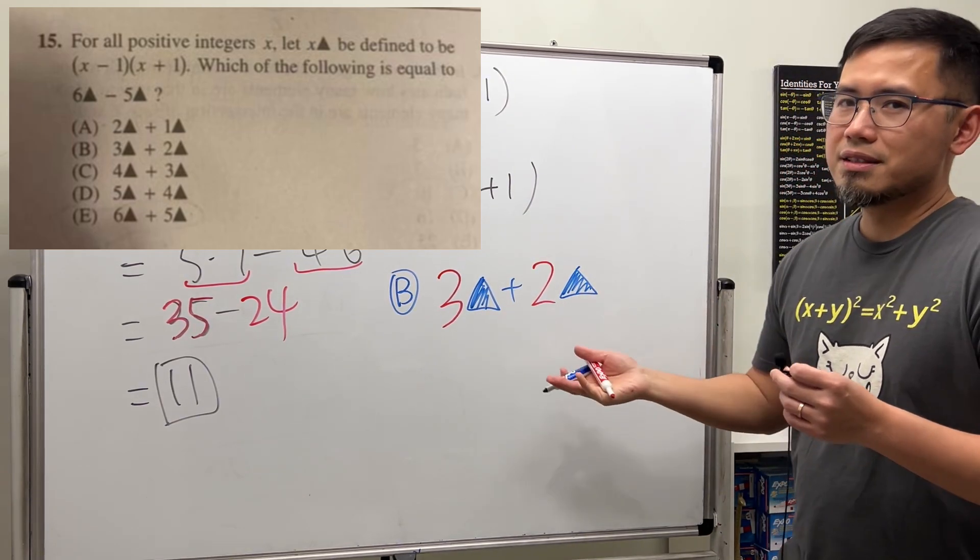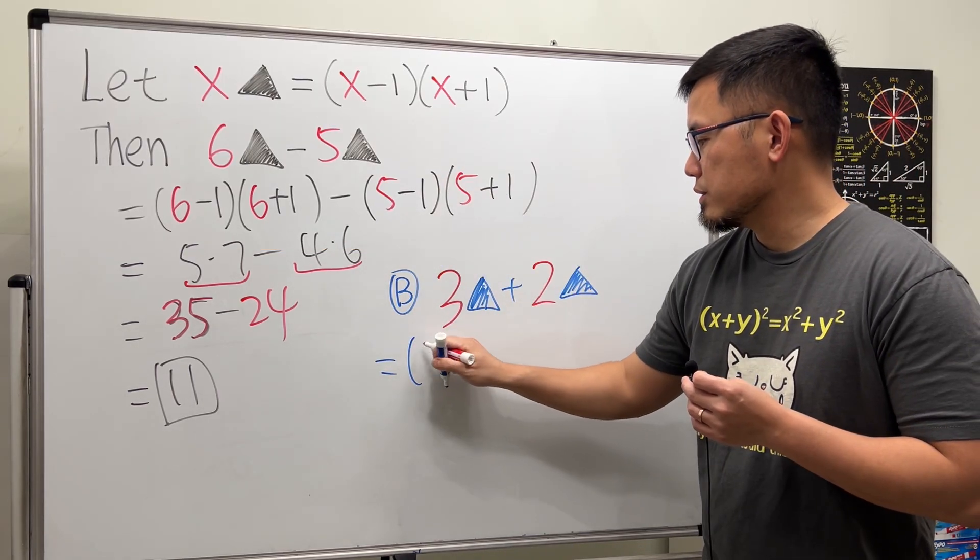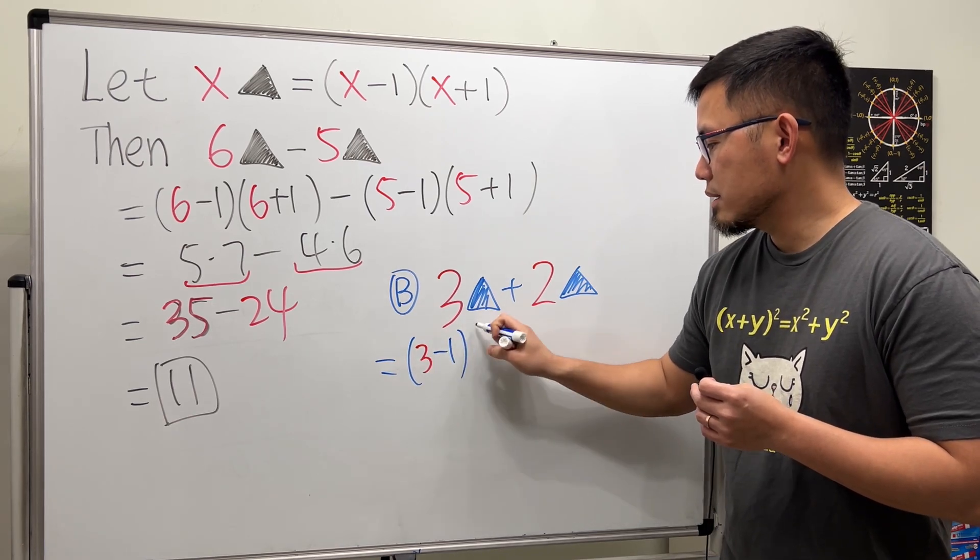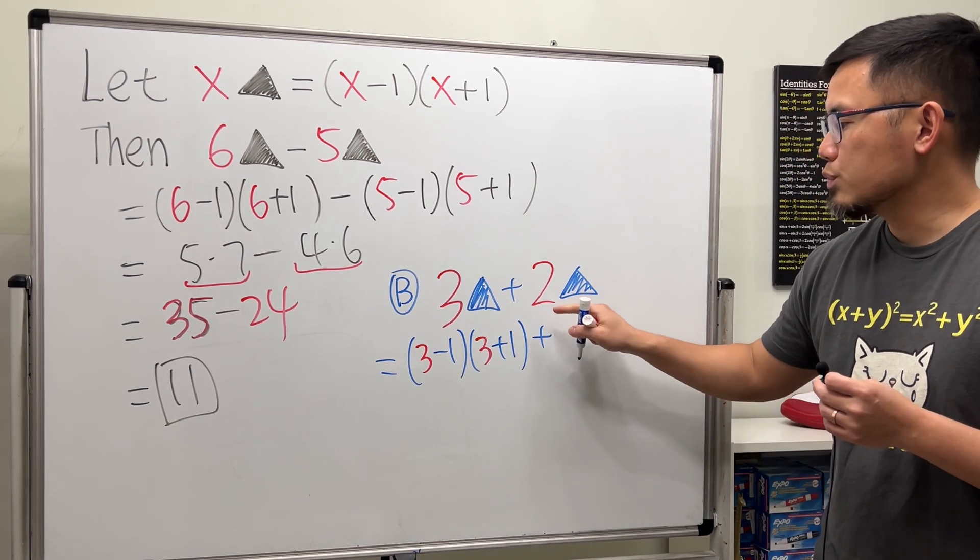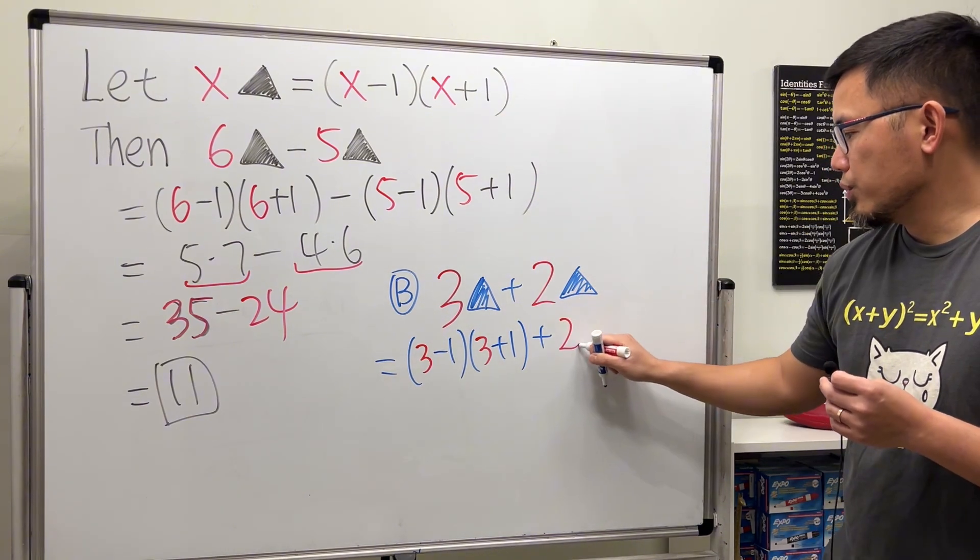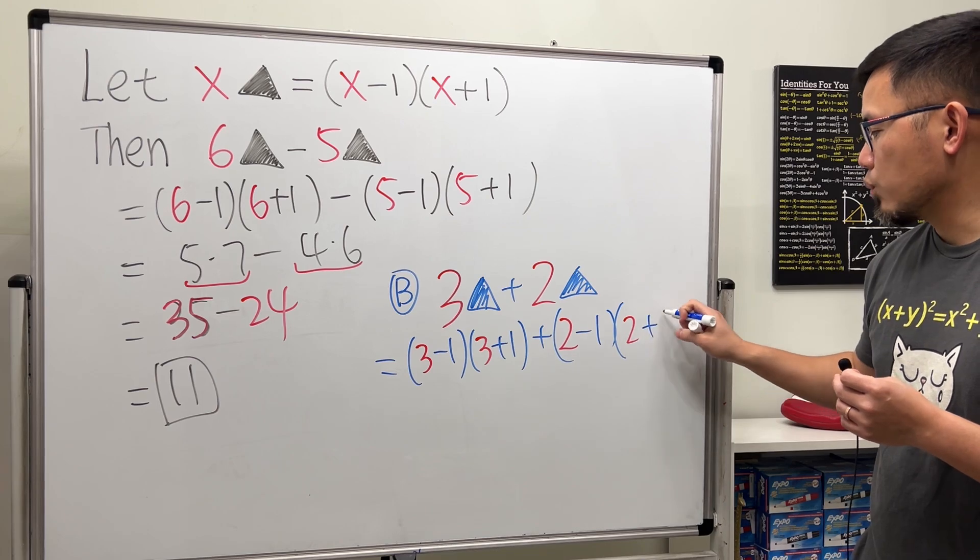So you test this out. 3 triangle - just plug in 3, you get 3 minus 1 times 3 plus 1. And you add this with 2 triangle, so 2 minus 1 times 2 plus 1.